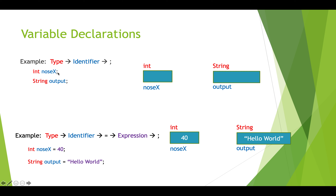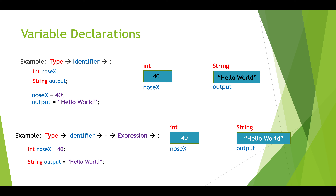You may wonder why you'd bother creating variables without putting a value in them. Sometimes we want to declare the variables and create those boxes in memory ahead of time because we're later going to calculate some value to put inside, and we don't know it yet. You can later come back and say: put the value 40 in 'noseX', or put 'hello world' into 'output' — that's how you do it at a later stage in your program.